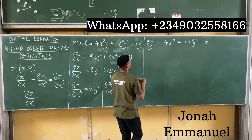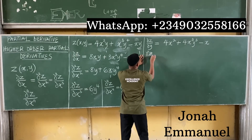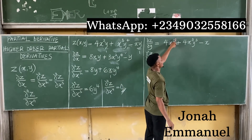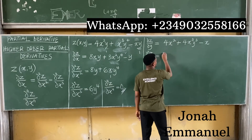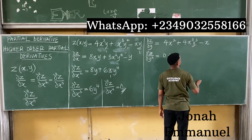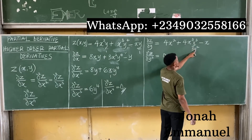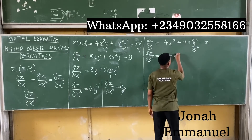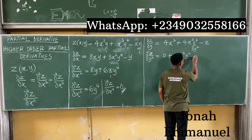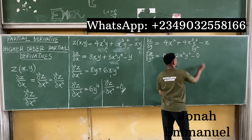Let's differentiate again. For partial squared z all over partial y squared: there is no y term in 4x squared, so it gives 0. The y term in 4x cubed y to the power 3: differentiating y cubed gives 3y squared; 3y squared times 4x cubed gives 12x cubed y squared. Minus x has no y, so differentiating gives 0. So partial squared z over partial y squared equals 12x cubed y squared.